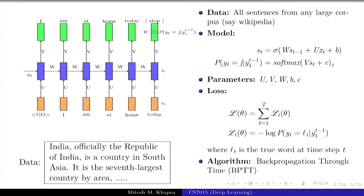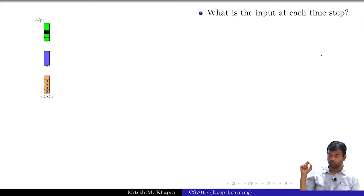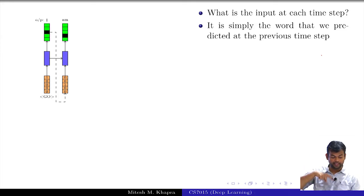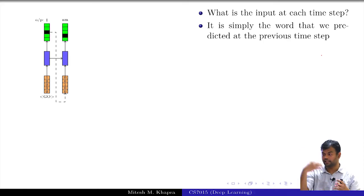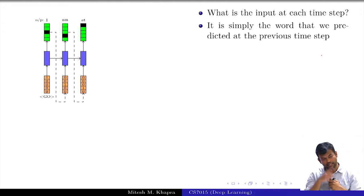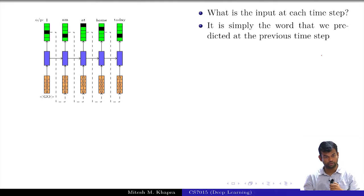One question: we wrote x_t as the input at every time step, but what is the input when predicting? At inference time, the input at time step t is the word predicted at the previous time step. At time step one we predicted 'I' as output, at the next step we feed that as the input, then we predicted 'am', feed that as input, and continue this chain throughout.